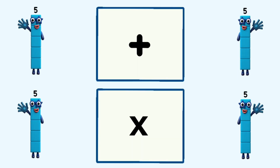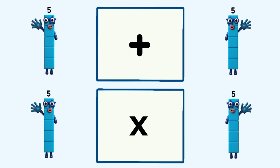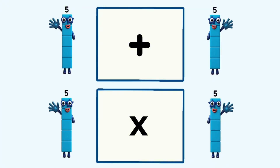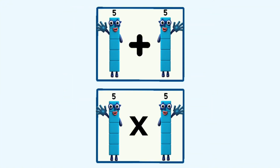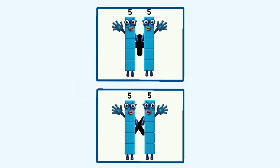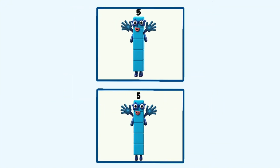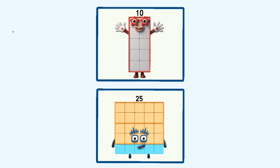5 plus 5 and 5 times 5 equals 10 and 25.